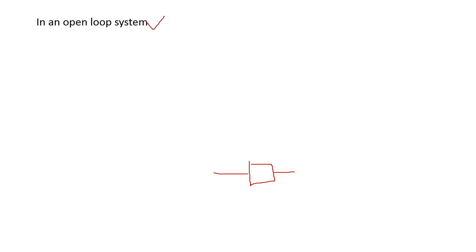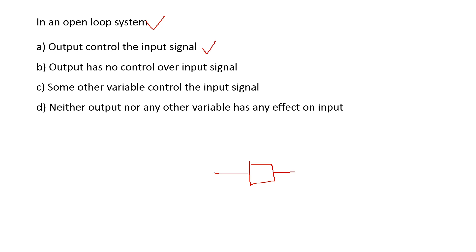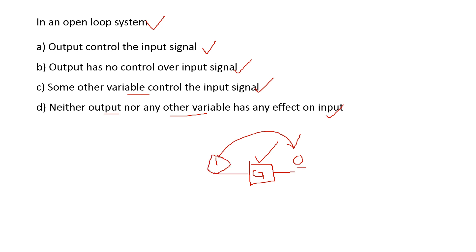Next: in an open loop system — options are: output controls the input signal; output has no effect over input signal; some other variable controls the input signal; neither output nor any other variable has any effect on the input. In an open loop system, depending upon the input we get the output, but there is no effect of output on the input. So option B is the right answer.